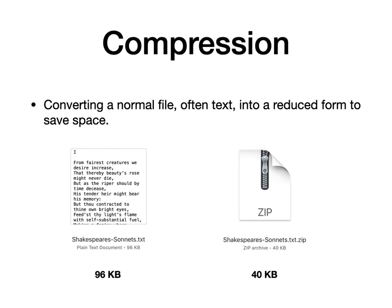If you've ever used a zip file or had to unzip something, that is compression. Somebody has taken a normal file in its text format and reduced it to save space. On the left, I have a text file containing a huge chunk of Shakespeare's sonnets. On disk, that is 96 kilobytes — 96,000 bytes, where bytes are usually eight bits. When I zip that file, when I compress it, it's now only taking up 40 kilobytes. How is that happening? That's the question today — how do compression algorithms work and what are they actually doing to make all the information a little bit more compact?